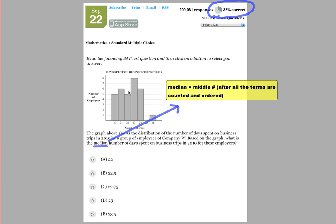Okay, so let's go ahead and count how many employees we have taking these business trips. We have five employees taking 20, we have six employees taking 21, we have five employees taking 22, we have eight employees taking 23, we have six employees taking 24, and we have one employee taking 26 days.